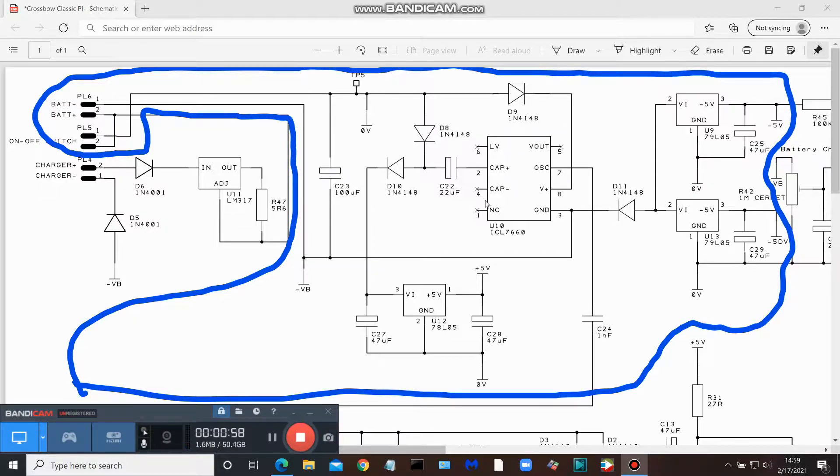Here on the schematic is a 7660. As I stated, or I will state depending on how the video goes together, I use an LT1054. You can use either one or the other. Three main components here are these linear voltage regulators. We have two 79L05s, you can see them right here.